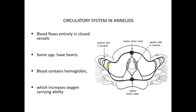Circulatory system: it is important to note that the annelids are the first group of invertebrates to have evolved a closed circulatory system. They have closed vessels and a type of heart. Their blood contains hemoglobin, which is very red, just as the hemoglobin of mammals, with the capacity to carry oxygen. In fact, in the annelids, the hemoglobin has a high oxygen affinity that allows them to cope in hypoxic environments.